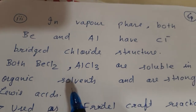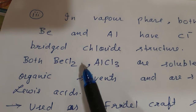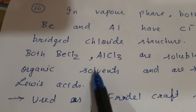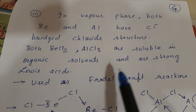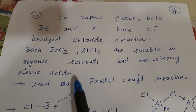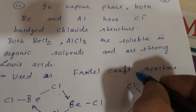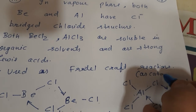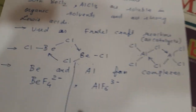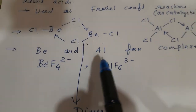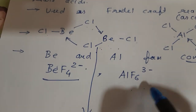So in the vapor phase both beryllium and aluminium have the chloride-bridged structure. Both beryllium chloride and aluminium chloride are soluble in organic solvents and are strong Lewis acids, used in Friedel-Crafts reactions and as catalysts. Both beryllium and aluminium form complexes like BeF₄²⁻ and AlF₆³⁻.